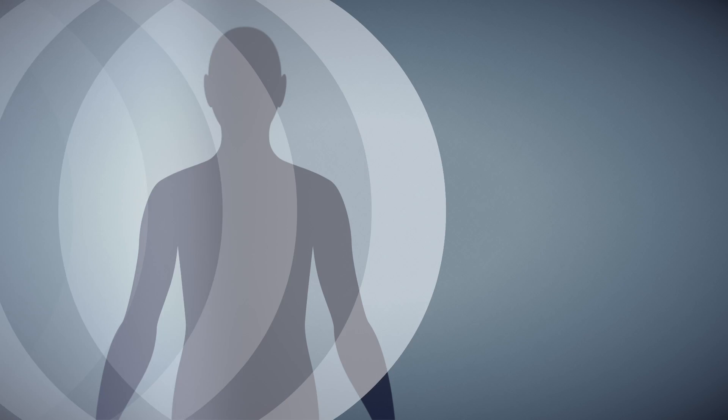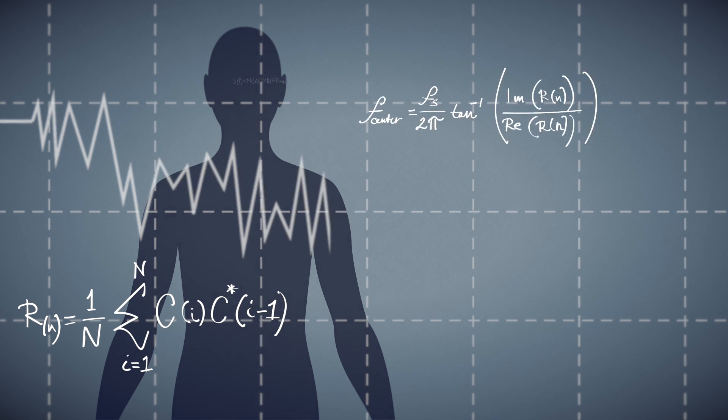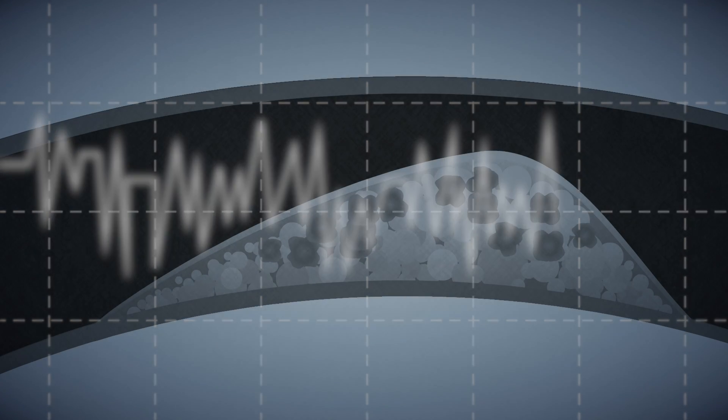When ultrasound travels through the body it is attenuated and reflected, and what we do is compensate for this attenuation of the frequency and then measure the frequency of the reflected ultrasound, and that tells us something about the tissue.